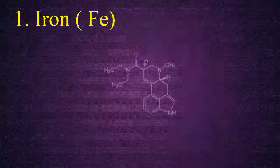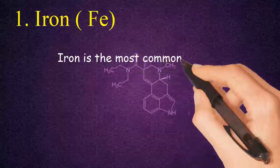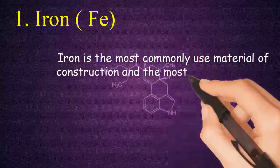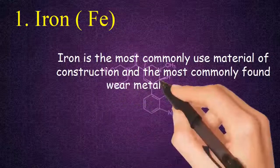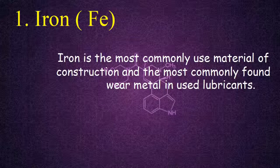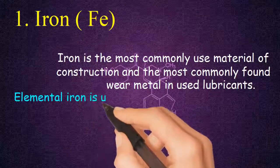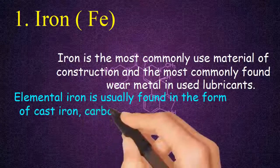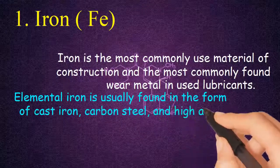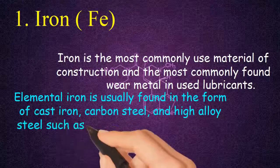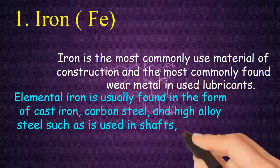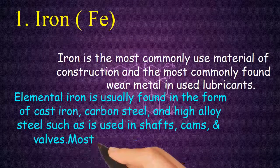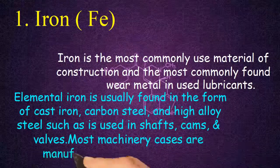Iron (Fe). Iron is the most commonly used material of construction and the most commonly found metal in used lubricants. Elemental iron is usually found in the form of cast iron, carbon steel, and high alloy steel, such as is used in shafts, cams, and valves. Most machinery cases are manufactured from cast iron.